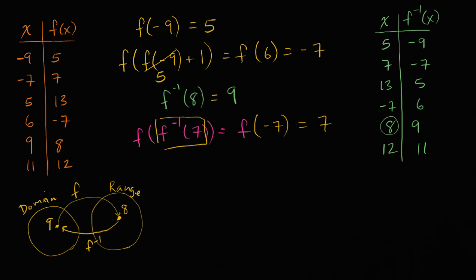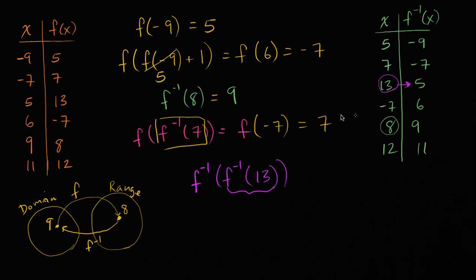Let's evaluate f inverse of f inverse of thirteen. What's f inverse of thirteen? That's looking at this table: f inverse goes from thirteen to five. So f inverse of thirteen is just five. This whole thing is then the same as f inverse of five. And f inverse of five? Well, f inverse goes from five to negative nine. So this is going to be equal to negative nine.